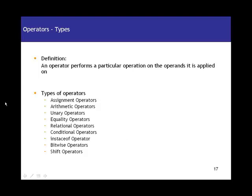Operators in Java are the same as operators in general mathematics. In an expression like 2 plus 3, the plus is an operator and 2 and 3 are operands. An operator performs a particular operation on the operands to which it is applied. We have all these different types of operators in Java, and we will be discussing them briefly since you likely already know what they are about.